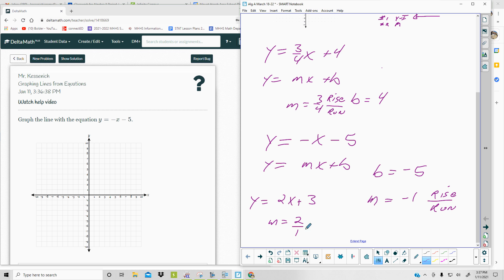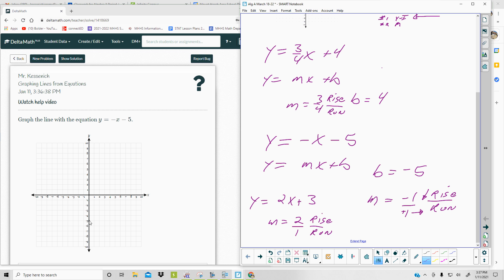So you rise 2, run 1. If I write this over 1, I have rise a negative 1, run 1. So to rise a negative number, it means you go down, and then you go right 1, because that's a positive number. So your y-intercept is where you start, negative 5. And from there, I rise a negative 1, which is down 1, right 1, and click. There you go.